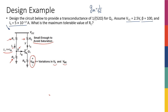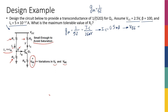Let's get started with the solution. gm = 1/52 = IC / Vt = IC / 26mV. This means IC is going to be 0.5 milliamps. From this IC, I can find VBE using the exponential equation, which gives 778 millivolts.